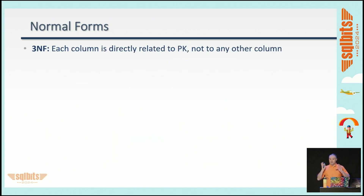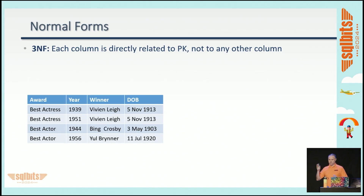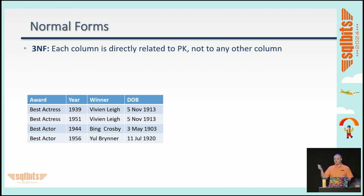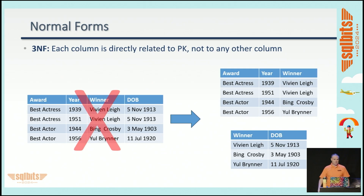The third normal form says each column is directly related to the primary key and not to any other column. For example, with Academy Award winners — award, year, winner, and birth date — the birth date of the winner isn't related to the award, it's related to the person. Vivien Leigh won Best Actress twice: 1939 for Gone with the Wind and 1951 for Streetcar Named Desire. So we split into two tables: birthday based on winner, and winner based on award and year. That adheres to the third normal form.